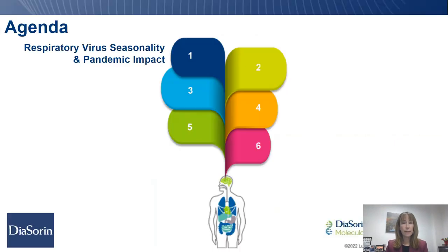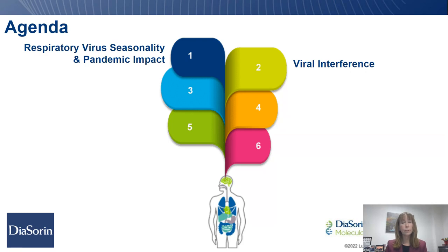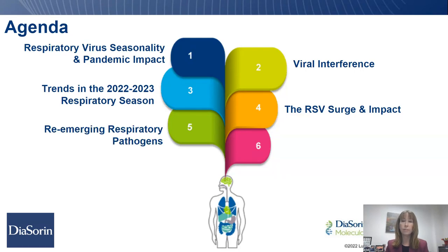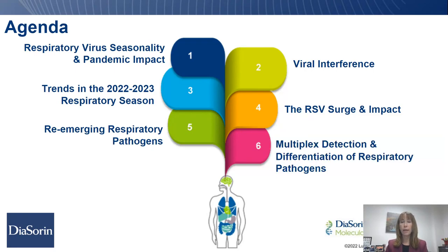We'll also take time to review the theory of viral interference and some other factors that can actually be shaping the resurgence of certain respiratory viruses. And then lastly, we will discuss why detecting and differentiating respiratory pathogens is really important for treatment and isolation strategies. In terms of today's agenda, we'll start by talking about respiratory virus seasonality, the pandemic's impact, viral interference, trends in the current 2022-2023 season, RSV, re-emerging respiratory pathogens, and multiplex detection.